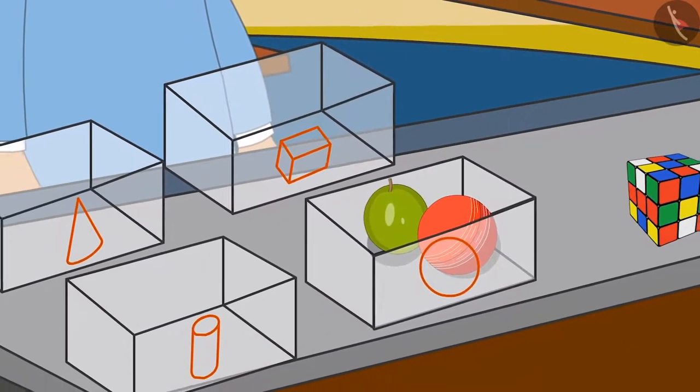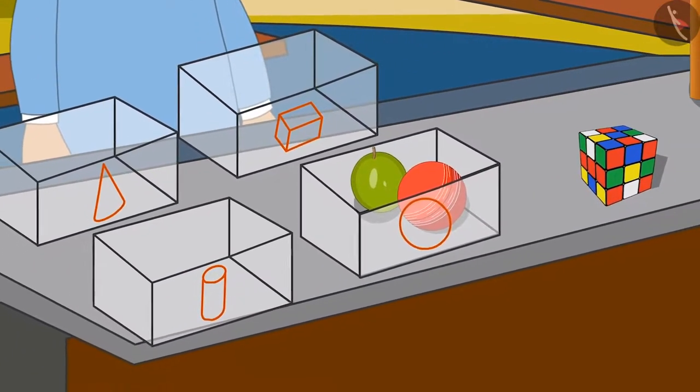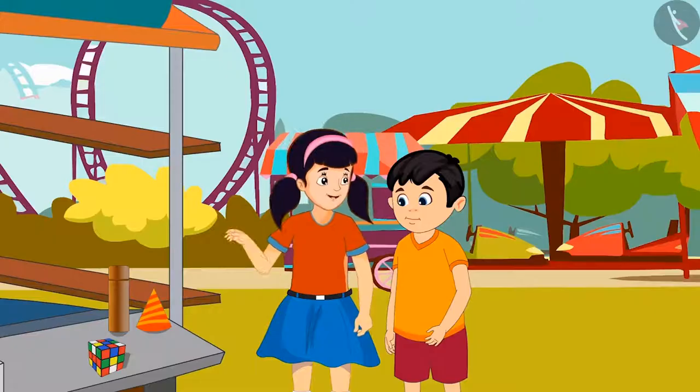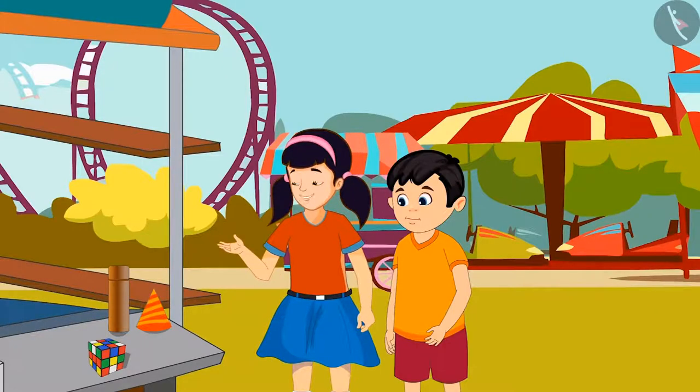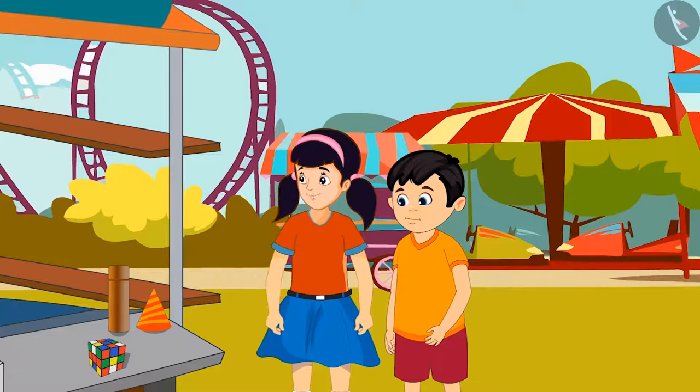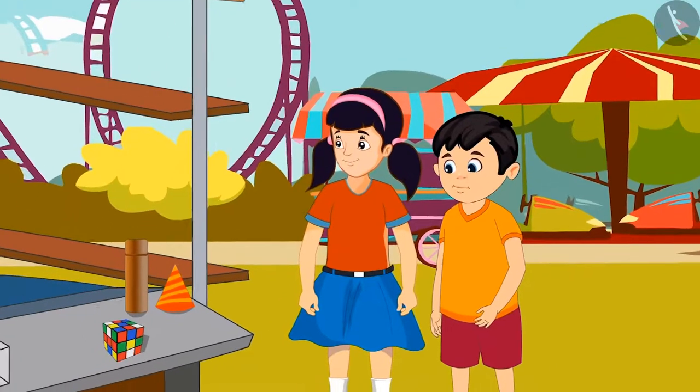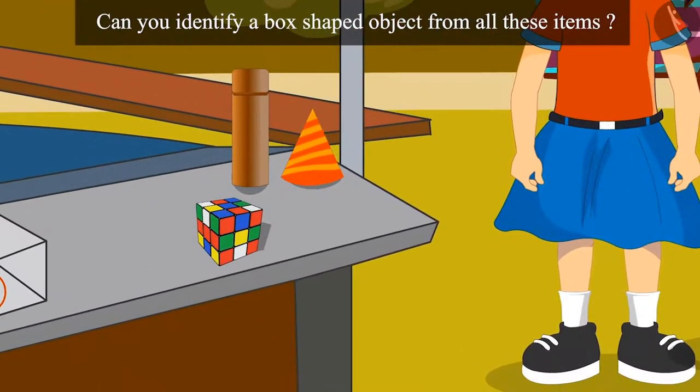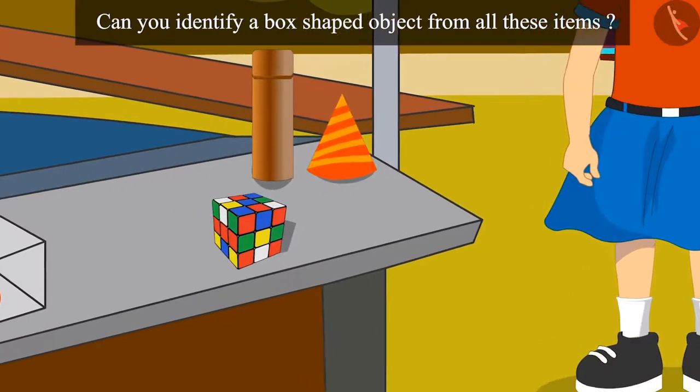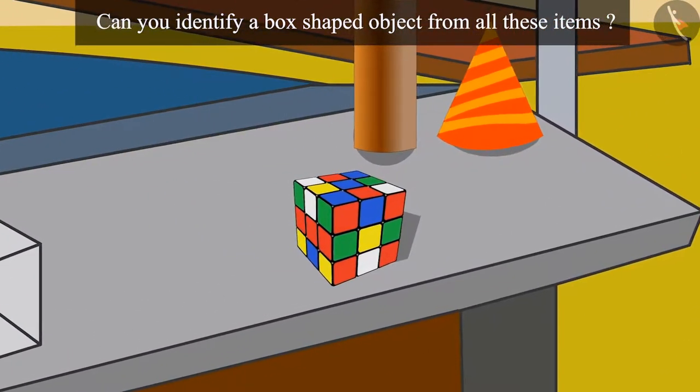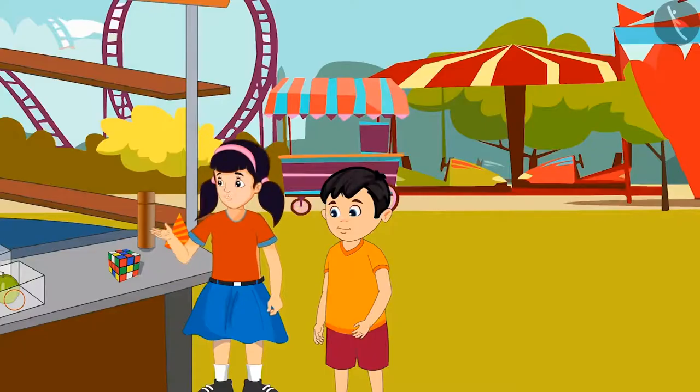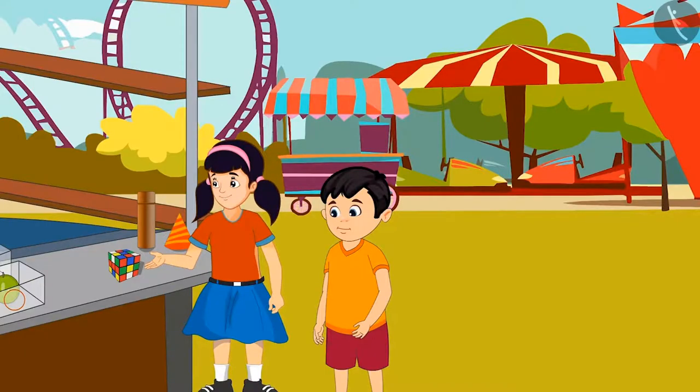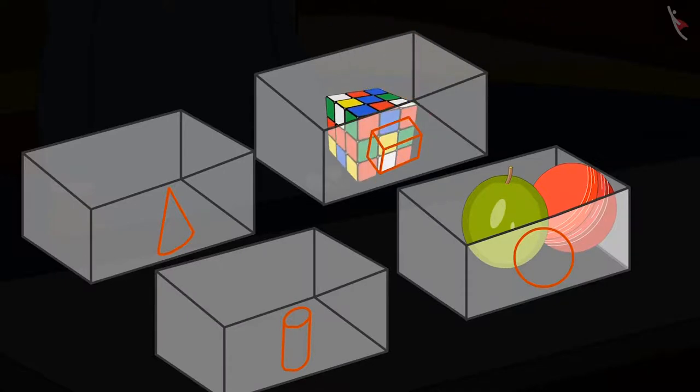Now they have to identify objects of other shapes. Come on Chotu, now let's look for items that have a box-like shape. Children, can you identify a box-shaped object from all these items? Right children, here is an object which looks like a box. Got it. Here it is. Now let's put it in this box.